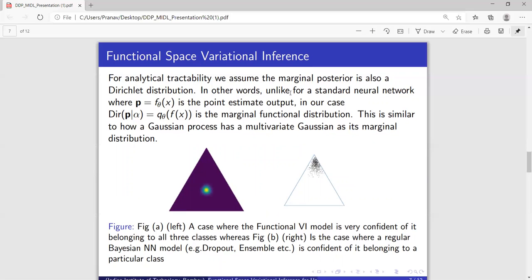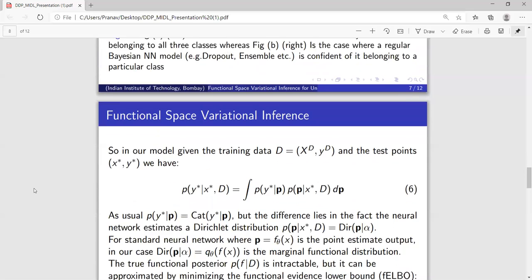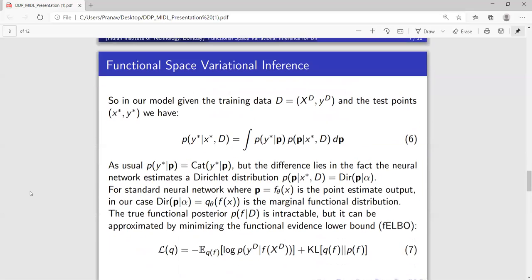So it is similar to how a Gaussian process has a multivariate Gaussian as a marginal distribution. So every point on this GP is a Gaussian, right? That's the one-to-one link between that and this.